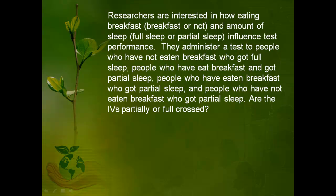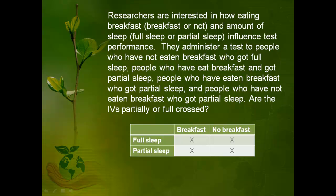Unpause the video when you think you have this. This is fully crossed because you have all the combinations of all the independent variables. You have people who got a full sleep and who had breakfast, people who had partial sleep and who had breakfast, people who had full sleep and no breakfast, and people who had partial sleep and no breakfast.